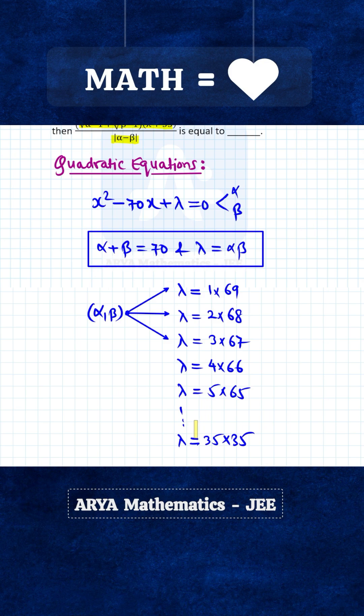We know that if the sum of two positive numbers is a constant, then their product is maximum when the numbers are equal. So the maximum possible value of lambda will be 35 into 35. Here we are interested in the minimum possible value.